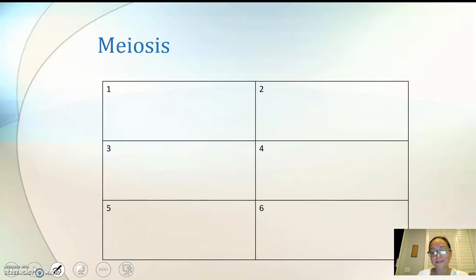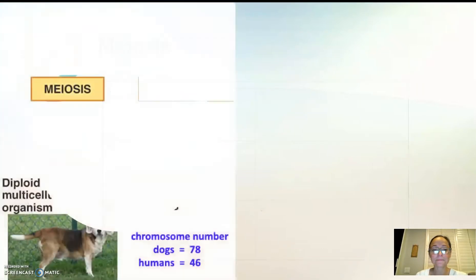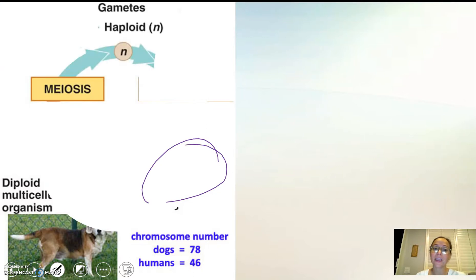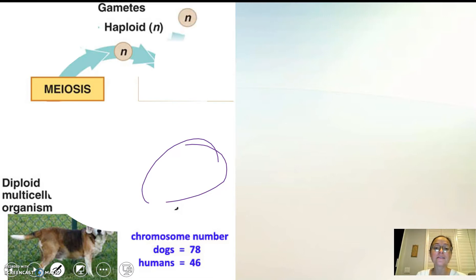For meiosis, we're going to make six boxes. When we look at two types of cell division, we have meiosis and we have mitosis. When we look at the purpose of each of these, they are different.